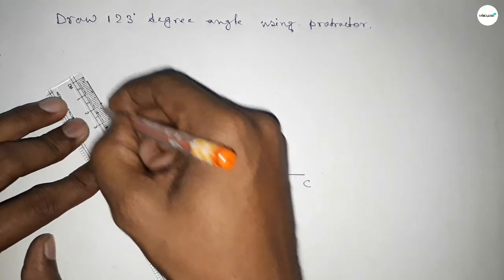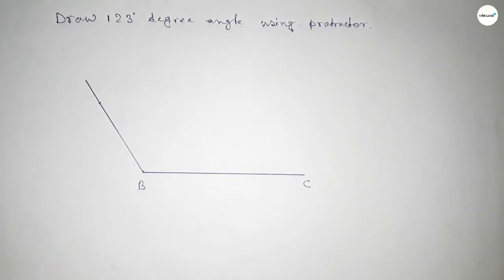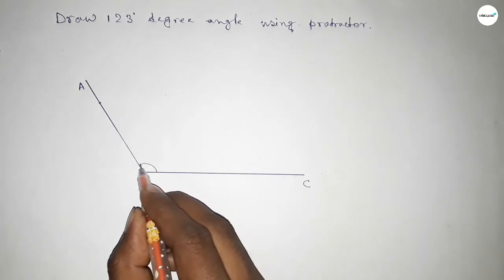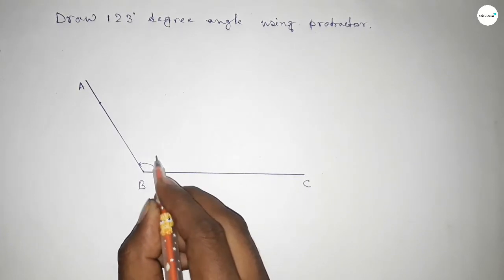And now taking here point A, so angle ABC. This is 123-degree angle.